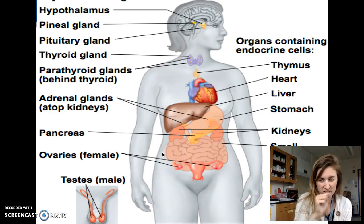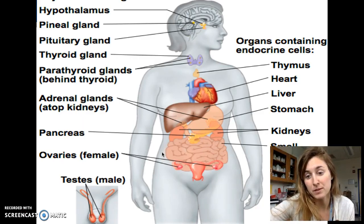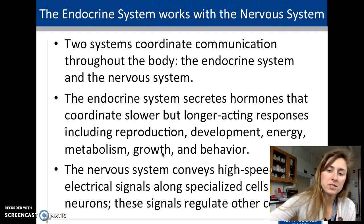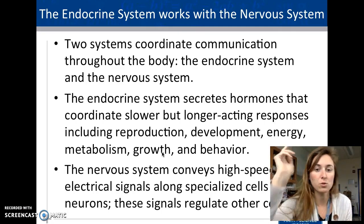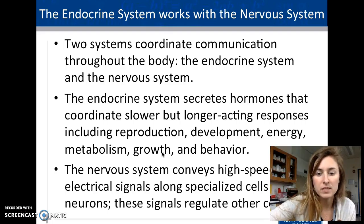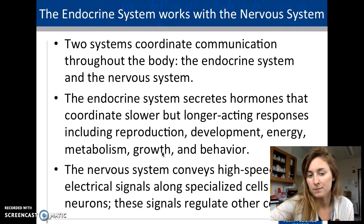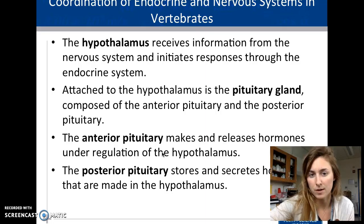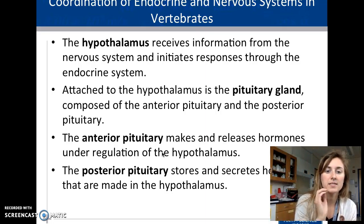Two systems coordinate together: the endocrine system and the nervous system. The endocrine system releases hormones that are longer-acting and slower. The nervous system sends high-speed electrical signals and can release neurotransmitters, which can in turn cause the endocrine system to activate.